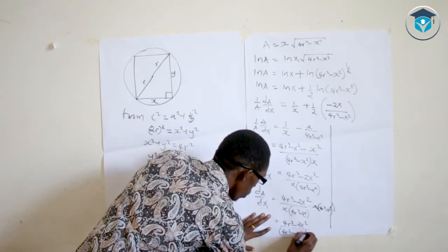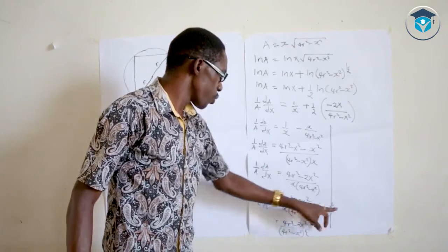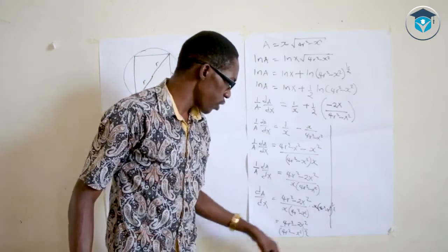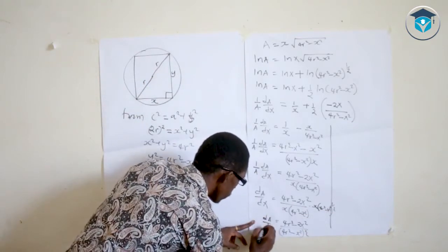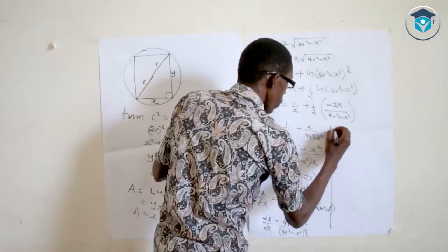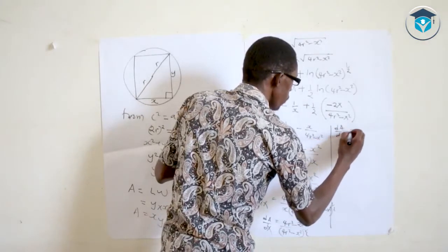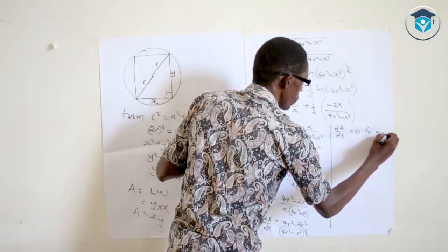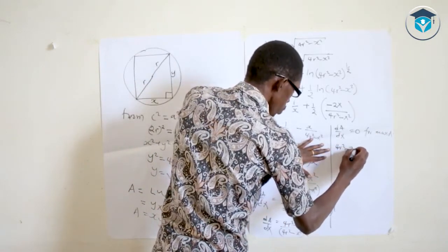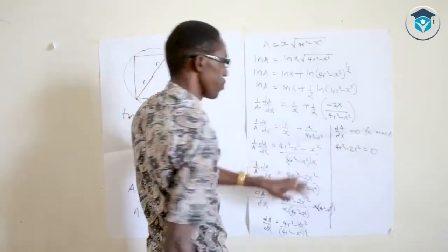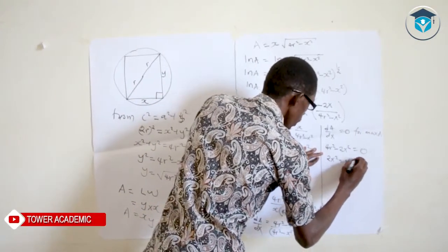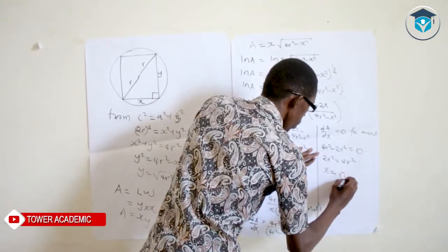For maximum area, we set dA/dx = 0. Since the denominator (4r² − x²)^(1/2) is nonzero, the numerator must equal zero: 4r² − 2x² = 0. Therefore 2x² = 4r², which gives x² = 2r², so x = r√2.